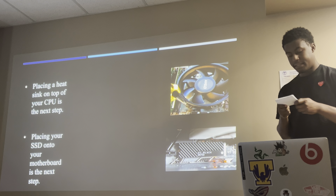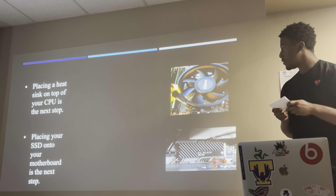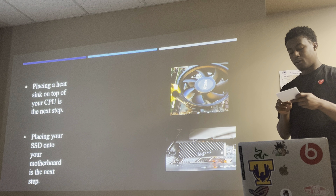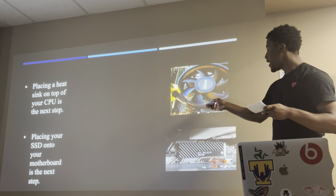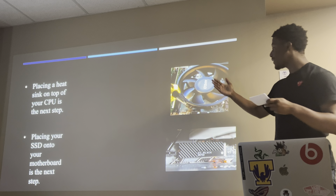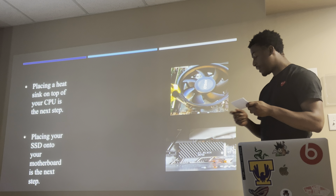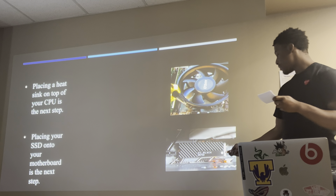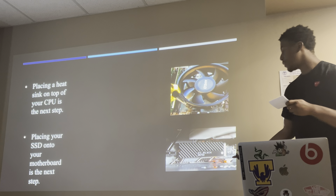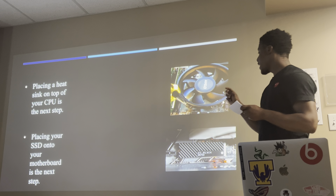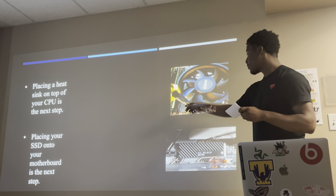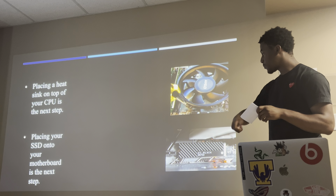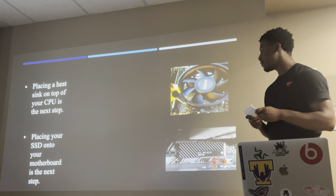The next step will be to place the heatsink on top of your CPU. The heatsink serves as a cooling system to keep your CPU from overheating, so you have the CPU and then the heatsink sits on top of it. Following this step, you'll need to place your NVMe drive onto your motherboard. When placing an NVMe drive, there's a small screw that secures it, which is why we need the screwdriver. That screwdriver is also used for the screws on your heatsink — place it on top, then screw it in manually or with an electric screwdriver.